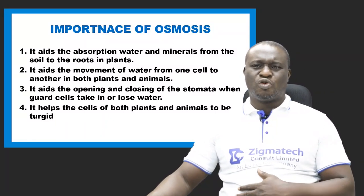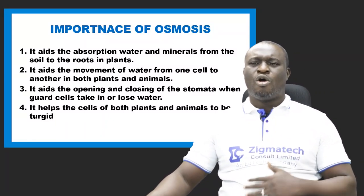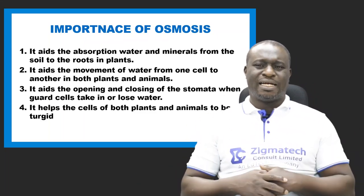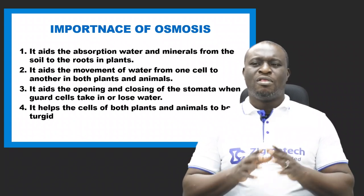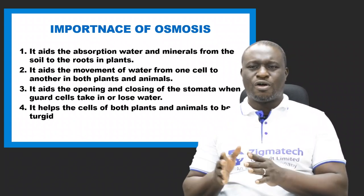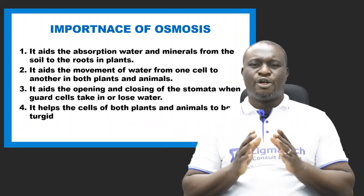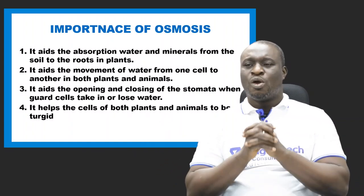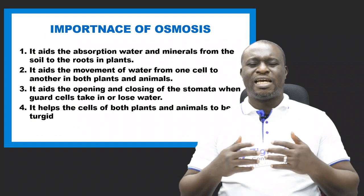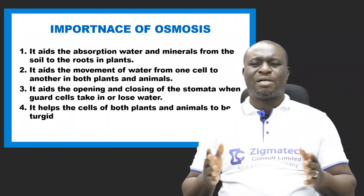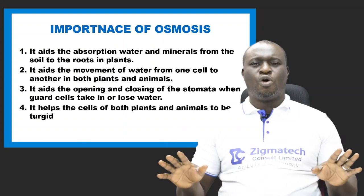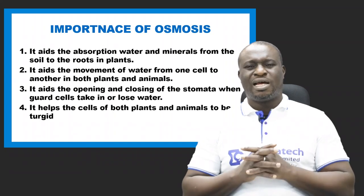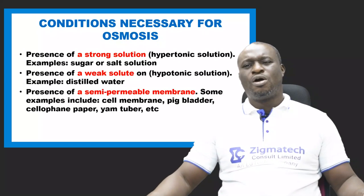What are the importance of osmosis? Number one, it aids the absorption of water and mineral salts from the soil to the roots in plants. Number two, it aids the movement of water from one cell to another in both plants and animals. Number three, it aids the opening and closing of the stomata when guard cells take in or lose water. Number four, it helps cells of both plants and animals to be turgid — talking about turgidity of cells.